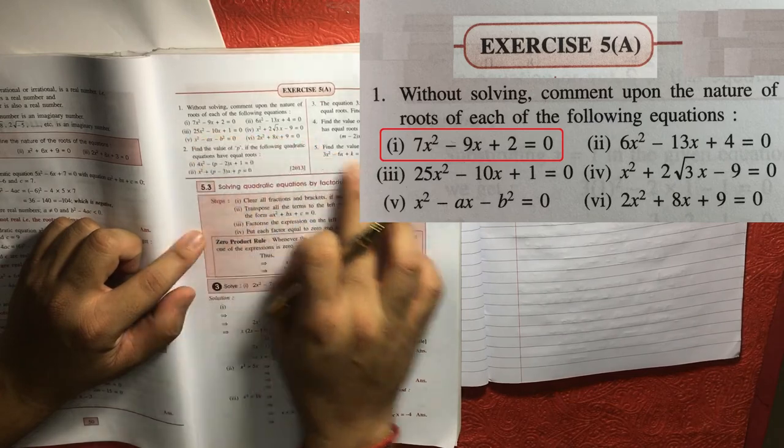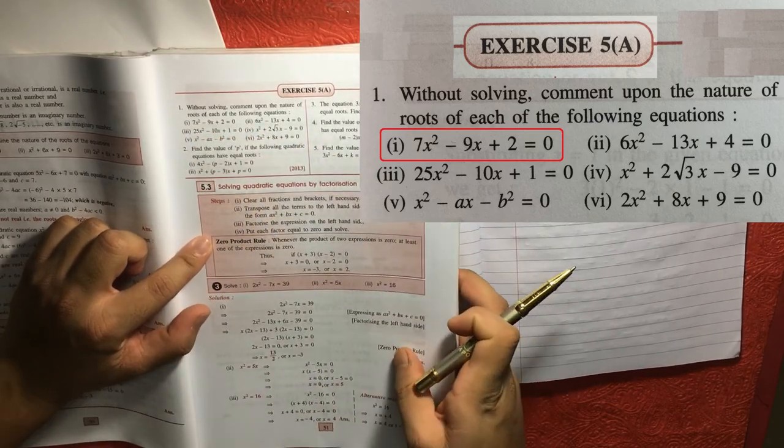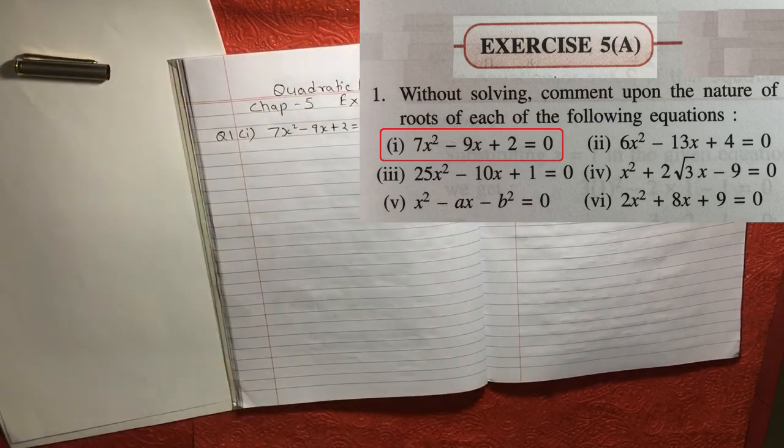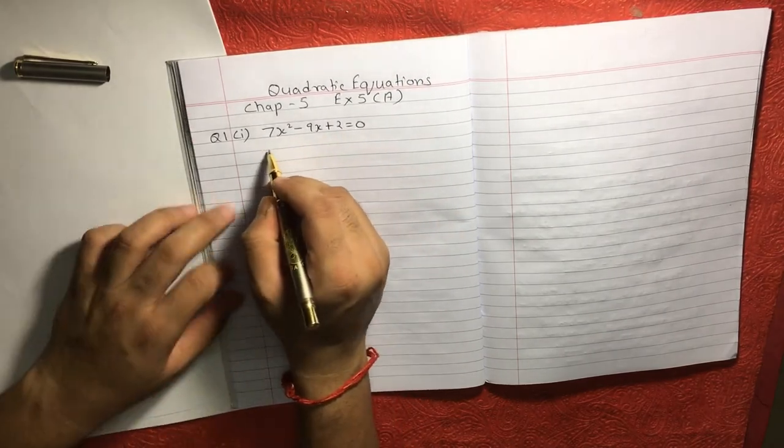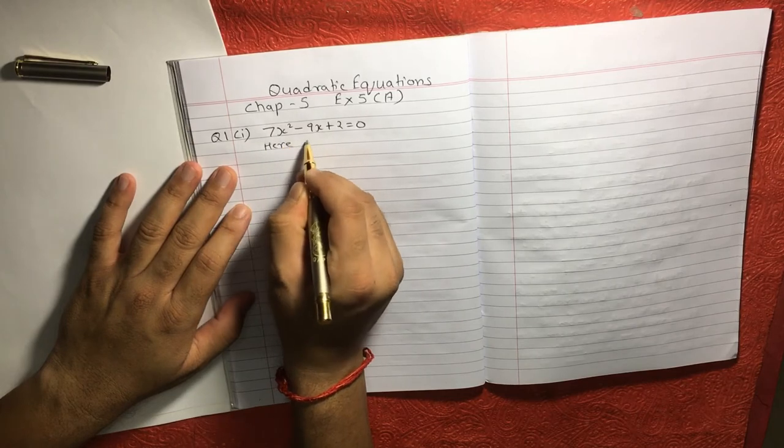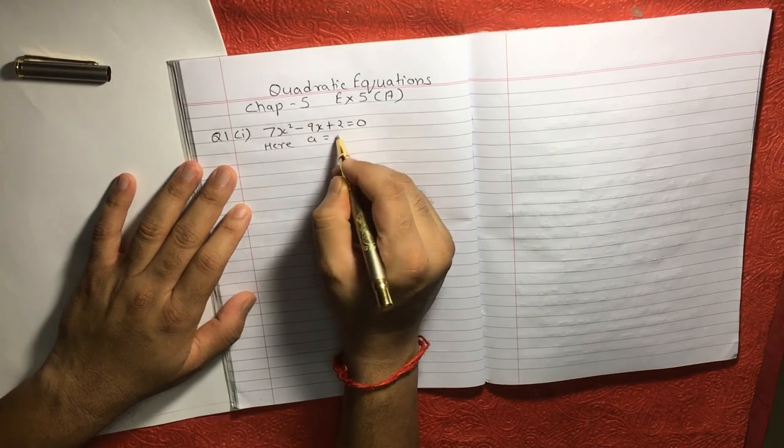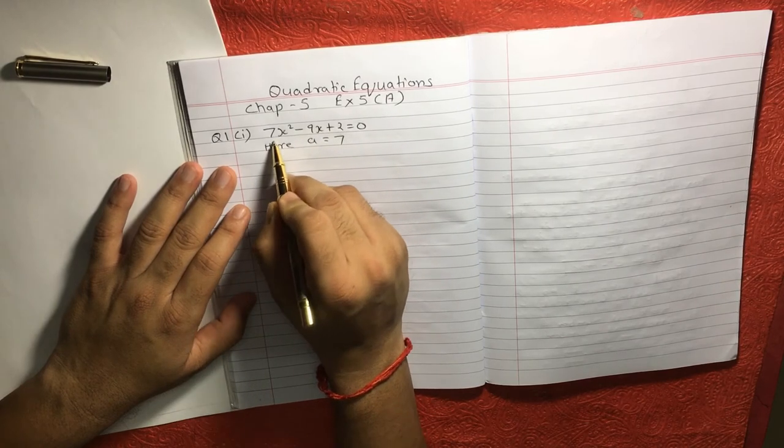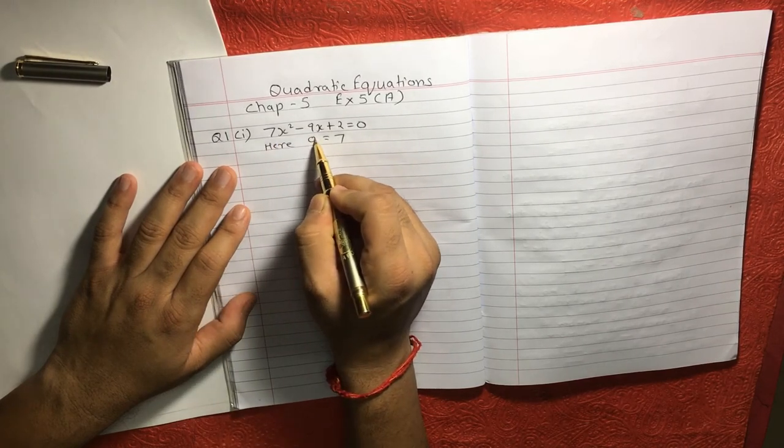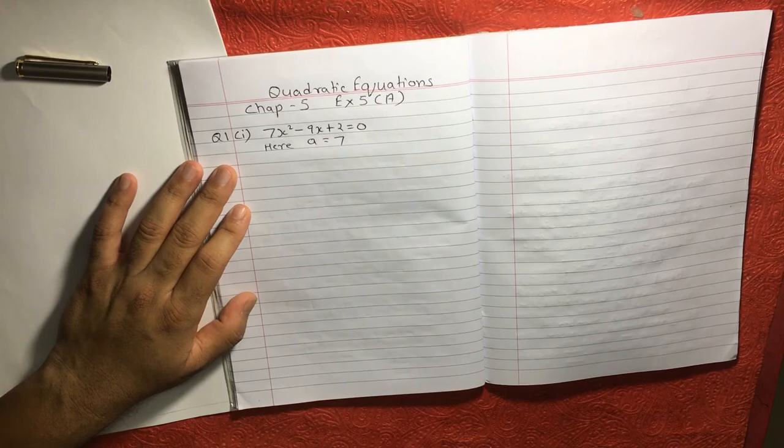So let me solve this. First question is saying 7x square minus 9x plus 2 is equal to 0. Let me solve it. So this is the question I have already written. Now, here, if we can see what is a. So here, a is equal to 7. Friends, before solving this kind of question, you have to make sure to write the value of all the data which you are going to use in this question.